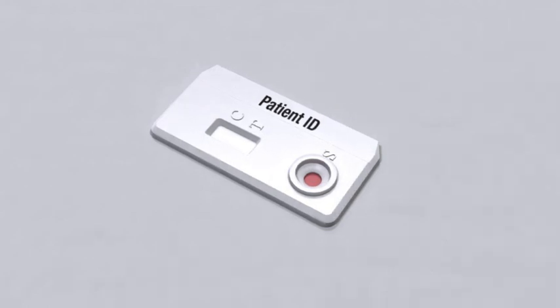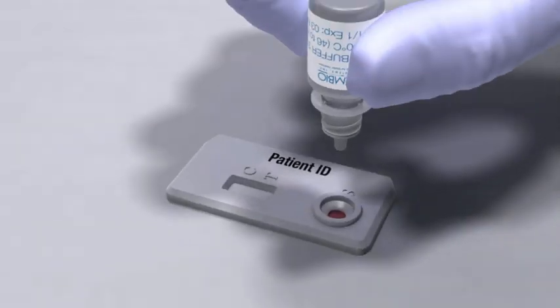Invert the running buffer bottle and hold it vertically, not at an angle, over the sample well. Add 3 drops of buffer slowly, drop by drop, into the sample well.